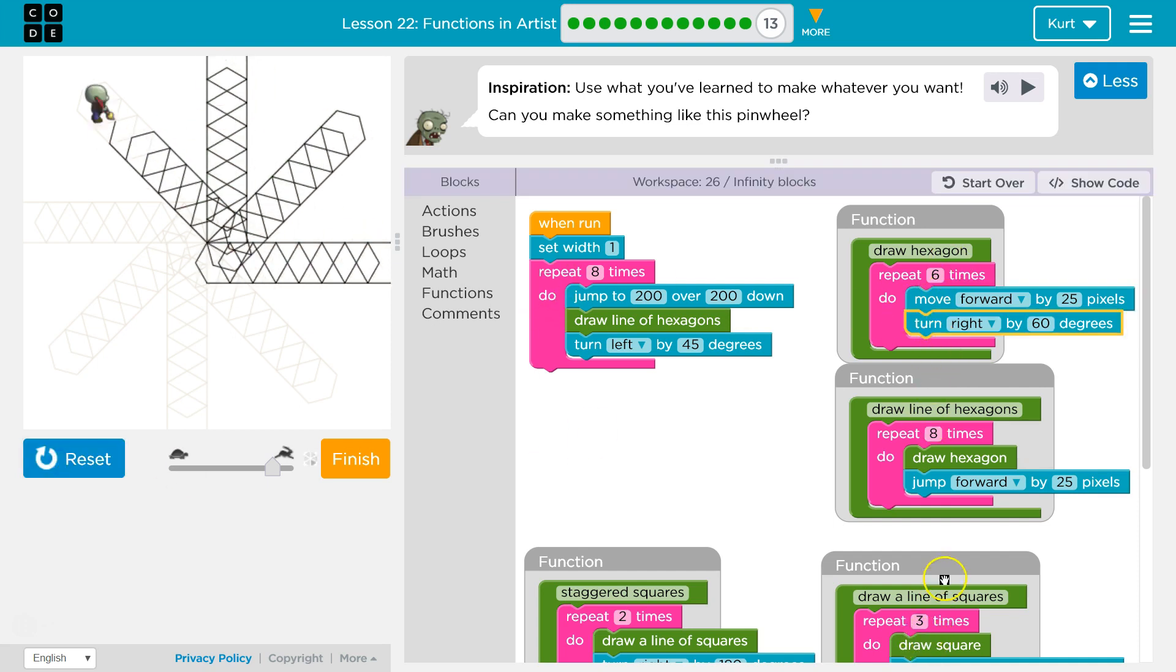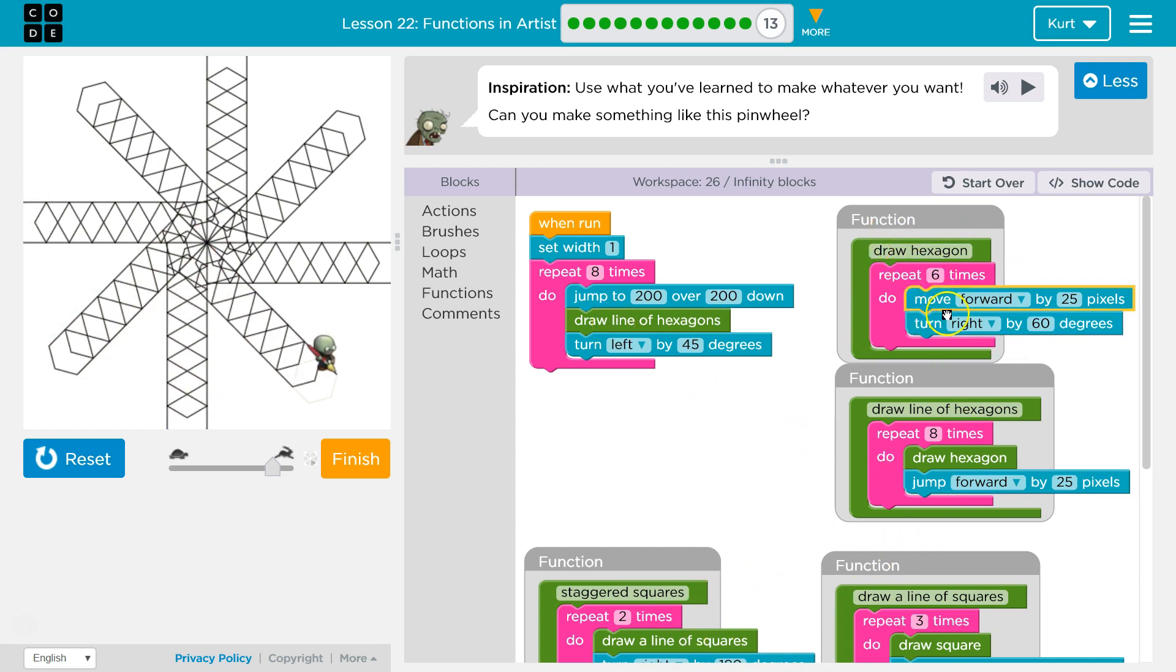And notice it's running through all these functions, so we could run this slow and see how it's doing all of this, but draw a line of hexagons is really calling on this, and we're, ah, what? Oh, my gosh.